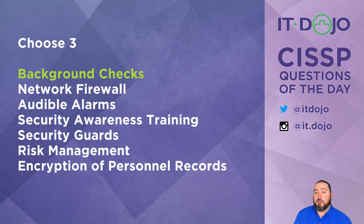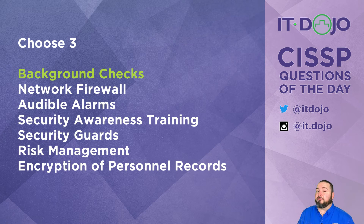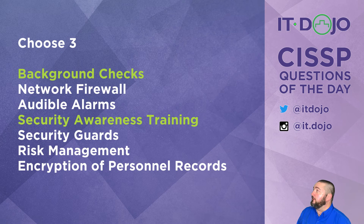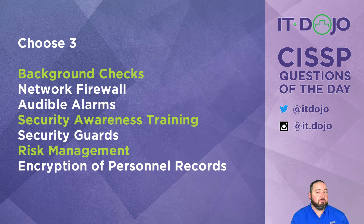Second item: network firewall — no, that is a technical control. Third item: audible alarms — no, that is a physical control. Next: security awareness training — absolutely, that is an administrative control. Physical security guards — no, that's physical. Risk management — absolutely, that is an administrative control.